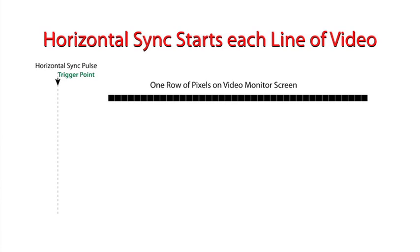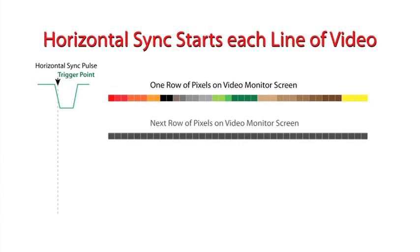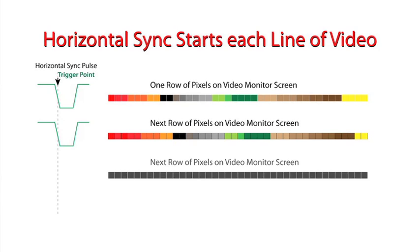When a horizontal sync pulse occurs, it triggers the monitor to display the video line. This occurs over and over again for every horizontal line that carries picture information.